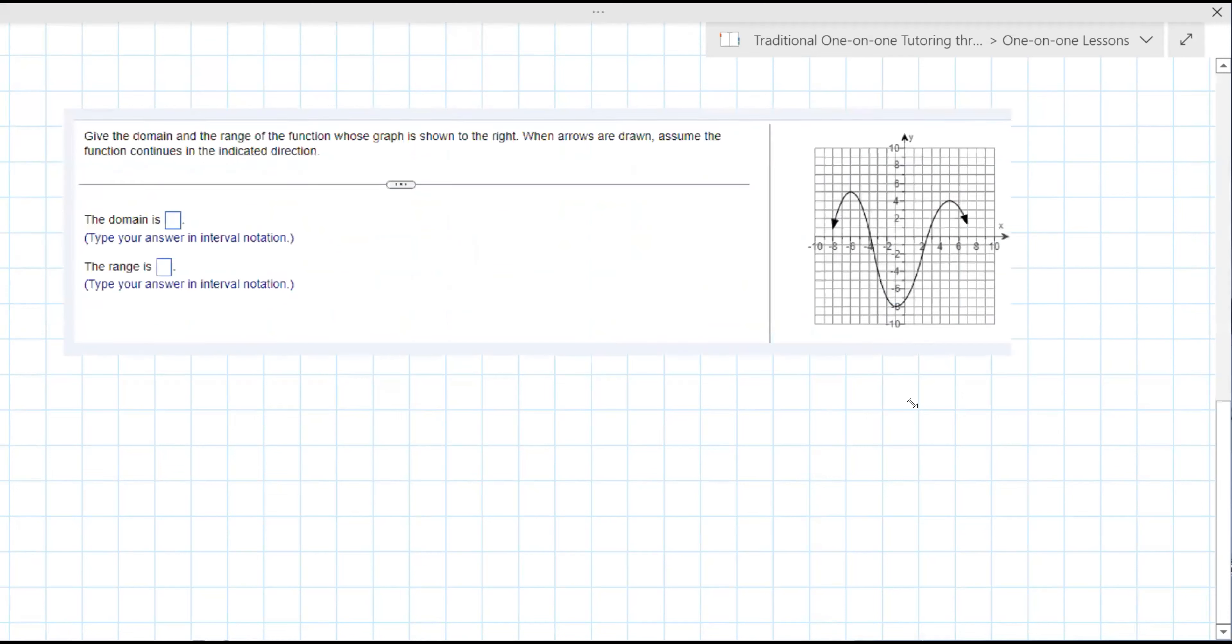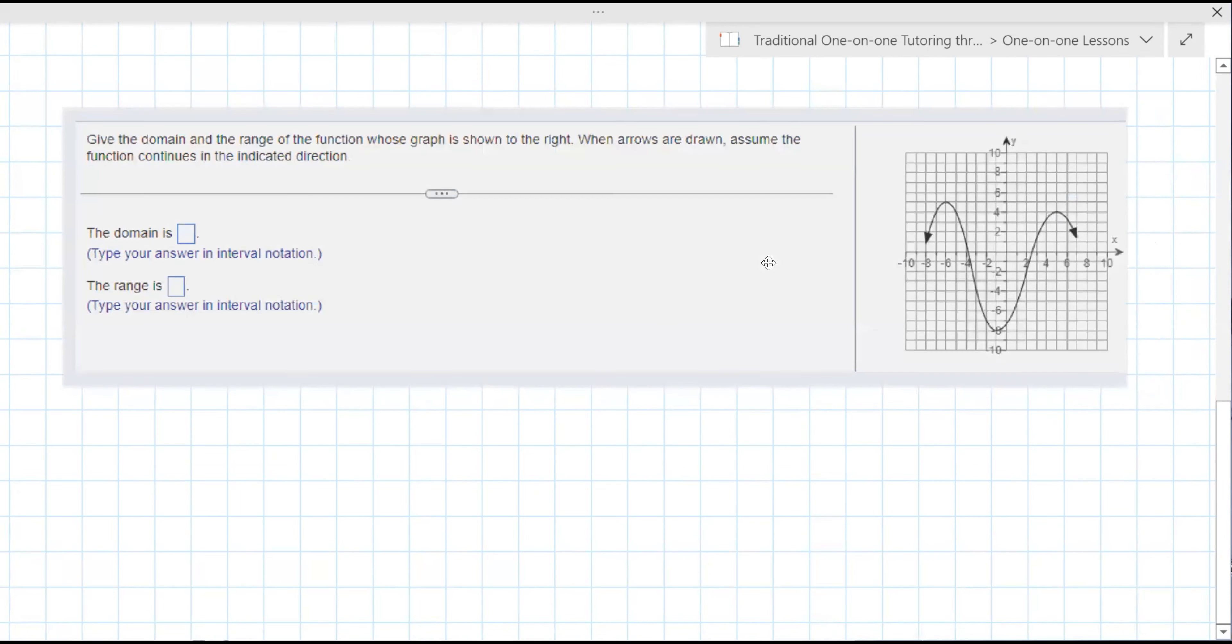All right. So there's another one that came in. So this one is a little more pixelated, but it's okay. I appreciate you not just taking pictures with your phone. These actually are better quality than I'm used to. So it says give the domain and range of the function whose graph is shown to the right. And again, this actually means it goes down forever. And this means it goes down forever. Sometimes it's helpful to actually draw that.